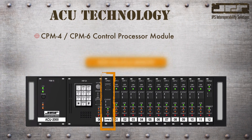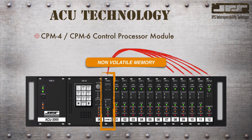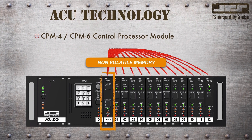The CPM contains non-volatile memory, which stores all the settings of the interface modules. If an interface module should fail, you can swap it with another similar module and the settings for that new module will be immediately derived from the CPM module. This will alleviate the need to realign the replacement module, and this can even be accomplished while interoperability is taking place with the unit turned on.